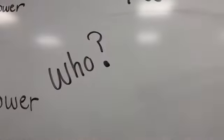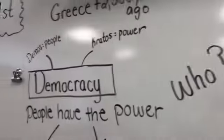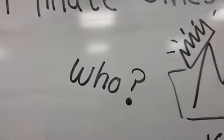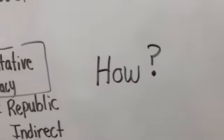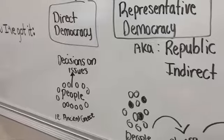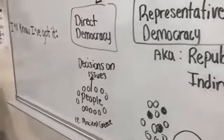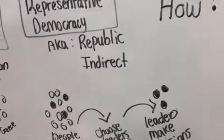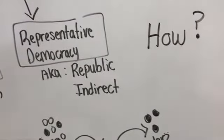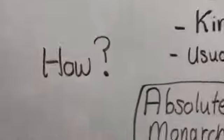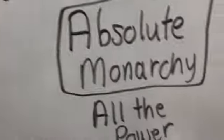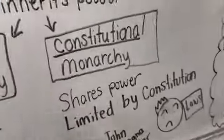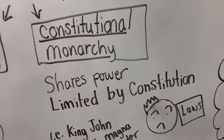Here's a quick review. Ask the question: who rules? If it's the people, it's a democracy. If the answer is a king or queen, it's a monarchy. If you want to know how they rule — if the people are making decisions on their own, that's a direct democracy. If they are electing leaders, that's a representative democracy. For monarchy, ask how much power does the king have? If they have all the power, that's absolute. If they have limited power, that's constitutional.